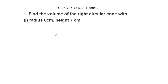First, find the volume of the right circular cone with radius 6 cm and height 7 cm. It is very simple. The formula is 1/3 × π × r²  × h.